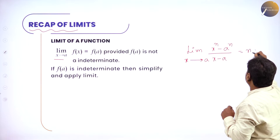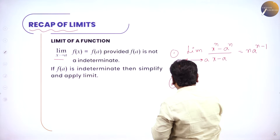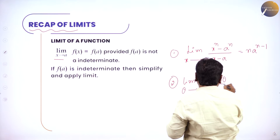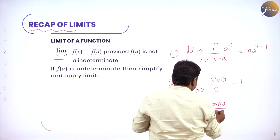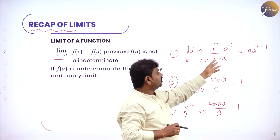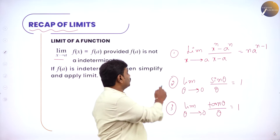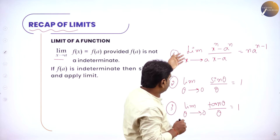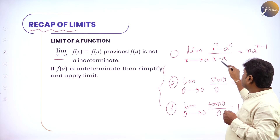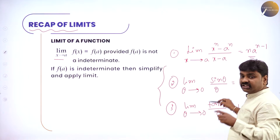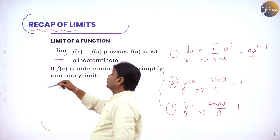The first theorem: limit x tends to a of x power n minus a power n divided by x minus a equals n into a power n minus 1. The second theorem you have learned: limit theta tends to 0 of sin theta by theta equals 1. And similarly, limit theta tends to 0 of tan theta by theta also equals 1. These are the theorems you studied. Sometimes we need to factorize, sometimes we apply the theorems — you should be thorough with all these from first year PUC or 11th standard.